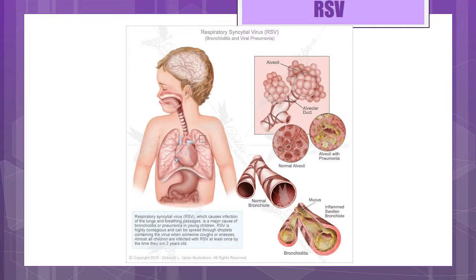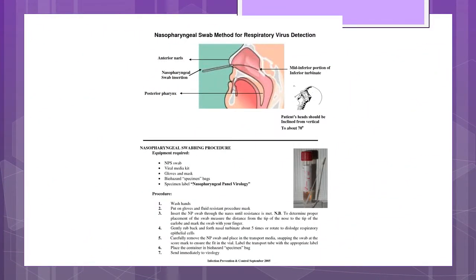For signs and symptoms, see page 1212, Box 40-8 of your textbook. For diagnosis, a nasopharyngeal washing for RSV antigen is done, preferably prior to admission to the unit, to help prevent the spread of the infection and allow for appropriate room assignments.